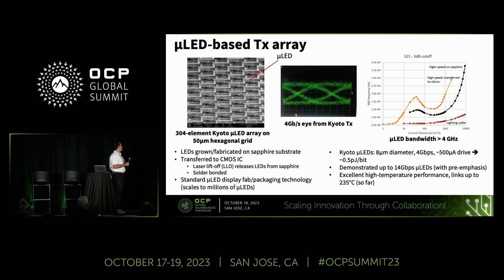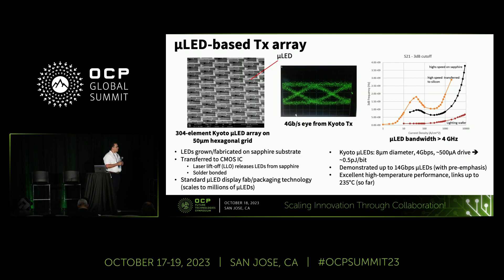Our micro-LED is grown on a sapphire substrate, then we use laser liftoff to transfer the micro-LEDs on top of the CMOS chip, where they are solder bonded. Our micro-LEDs are 8 micrometers in diameter, run at 4 gigabit per second, and consume 500 microamps, which translates to 0.5 picojoule per bit. We have already demonstrated a 14 gigabit per second micro-LED with pre-emphasis. The bandwidth of the micro-LED is proportional to current density and we can achieve up to 4 GHz bandwidth. This eye diagram was captured from the micro-LED assembled on our chip.